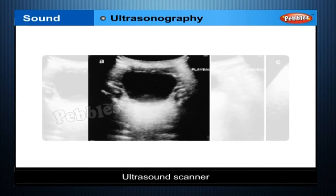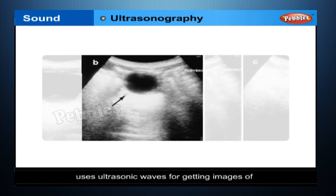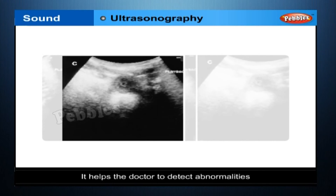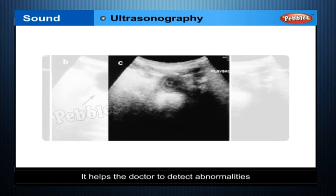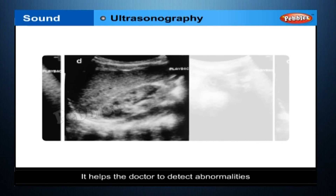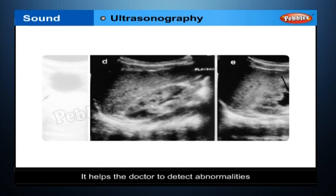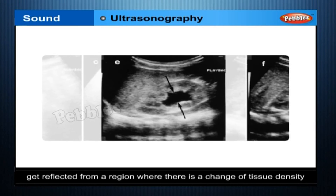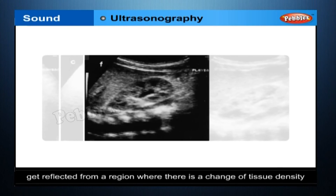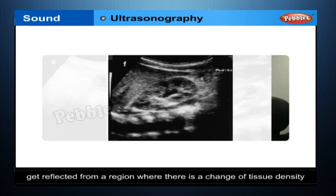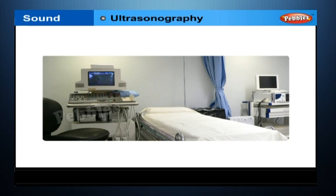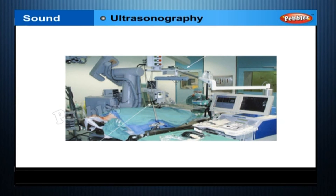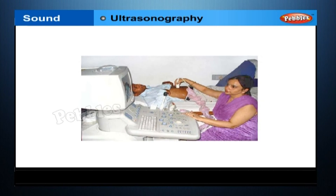Ultrasonography. An ultrasound scanner is an instrument which uses ultrasonic waves for getting images of internal organs of the human body. It helps the doctor to detect abnormalities such as stones in the gallbladder and kidney or tumors in different organs. The ultrasonic waves travel through the tissues of the body and get reflected from a region where there is a change of tissue density. These waves are then converted into electrical signals that are used to generate images, displayed on a monitor or printed on a film. This technique is called ultrasonography.